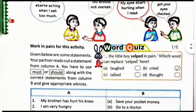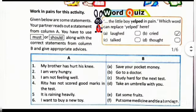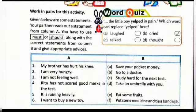Now work in pairs for this activity. To make a pair, you may take help of your friends or your family members. Your partner reads out a statement from column A, and you have to use 'must' or 'should' along with the correct statements from column B and give appropriate advice.